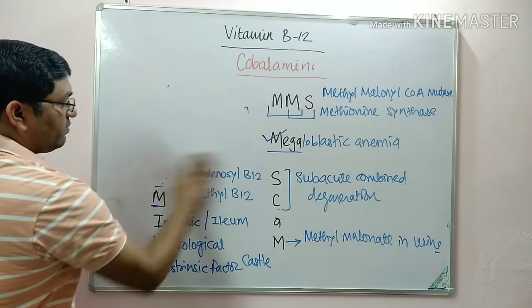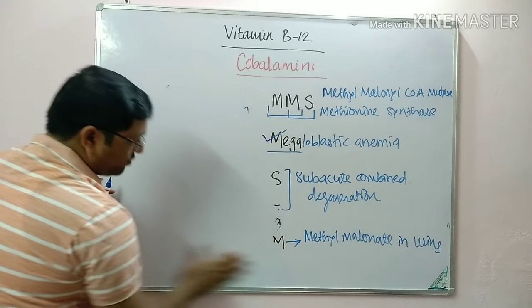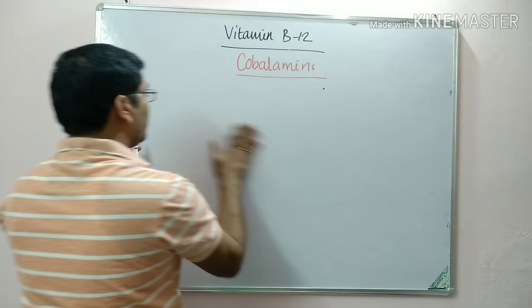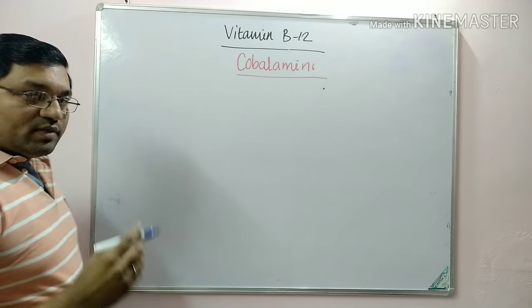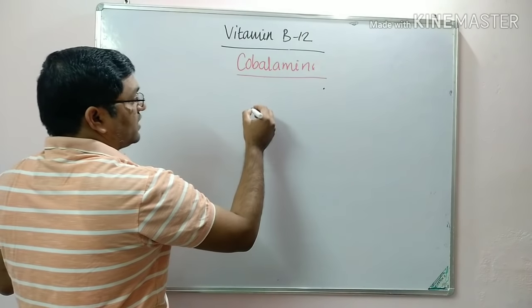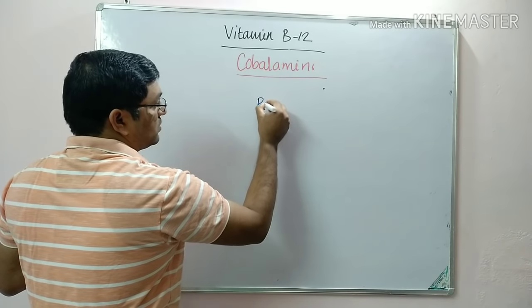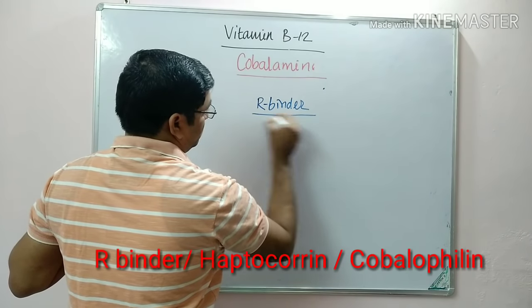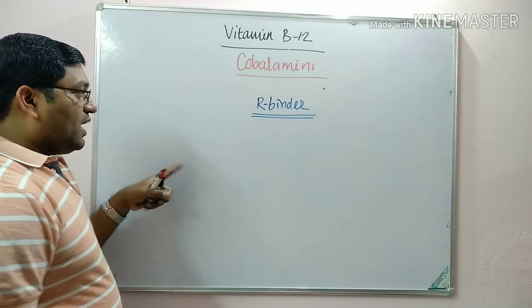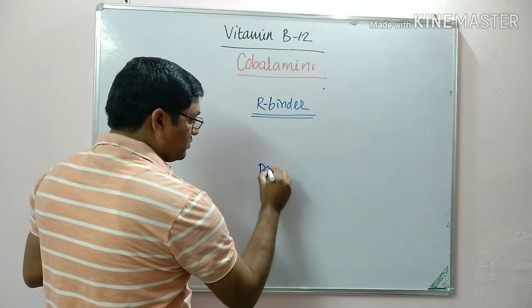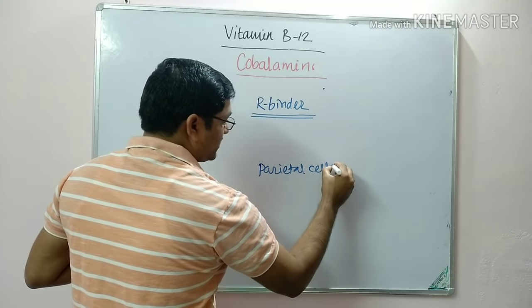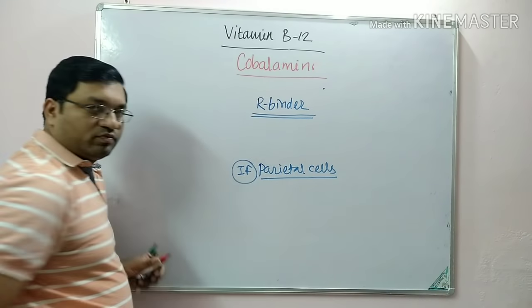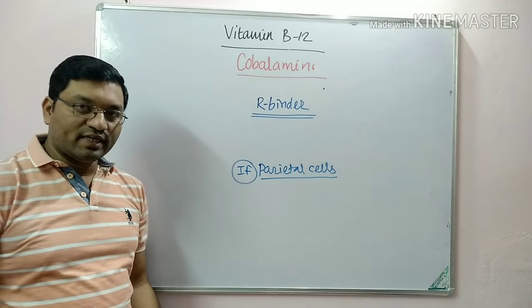Now covering the digestion, absorption, and transport of Vitamin B12. The salivary gland secretes an important substance known as R-binder, and the gastric parietal cells secrete intrinsic factor. These two factors are very important for the digestion and absorption of Vitamin B12.